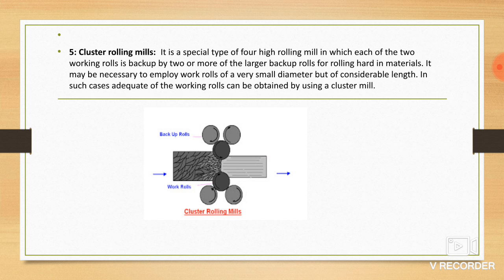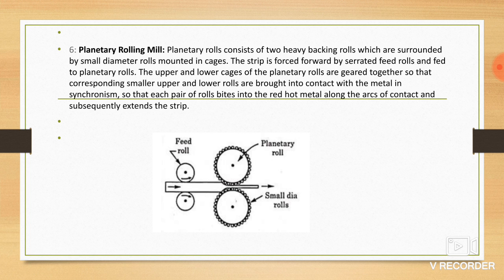Six, planetary rolling mill. The planetary rolling mill consists of two high heavy backing rolls which are surrounded by small diameter rolls mounted in cages. The strip is fed forward through the feed rolls and fed to planetary rolls. This is the diagram of planetary rolling mill.